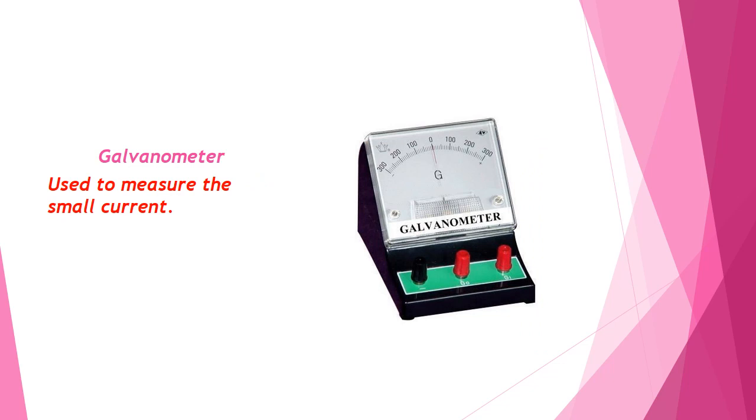Galvanometer. Galvanometer is an electromechanical measuring instrument for electric current. Galvanometer works by deflecting a pointer in response to an electric current flowing through a coil in a constant magnetic field. Galvanometers can be thought of as a kind of actuator.